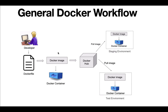Once we create a Dockerfile, we can use the docker build command to build the Docker image. A Docker image is nothing but an executable package, and we can run this Docker image in a container. A Docker container is nothing but a running instance of a Docker image. We use the docker build command to build the image from the Dockerfile, and then we use the docker run command to run the image in a Docker container. This complete process is called dockerization.